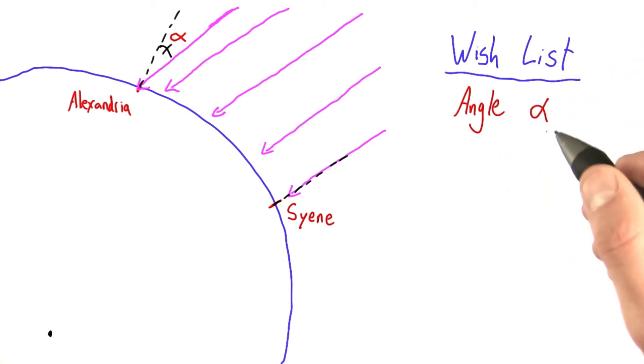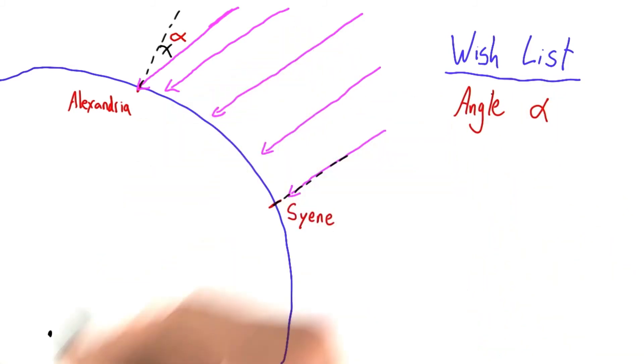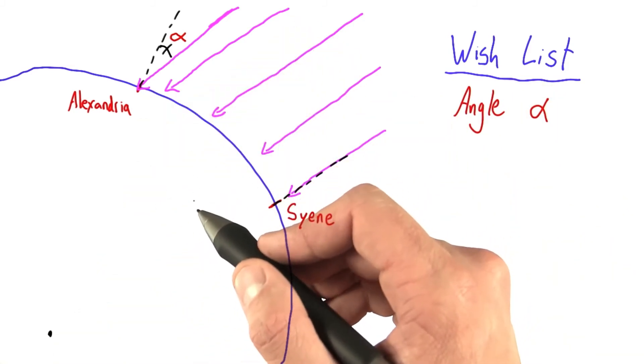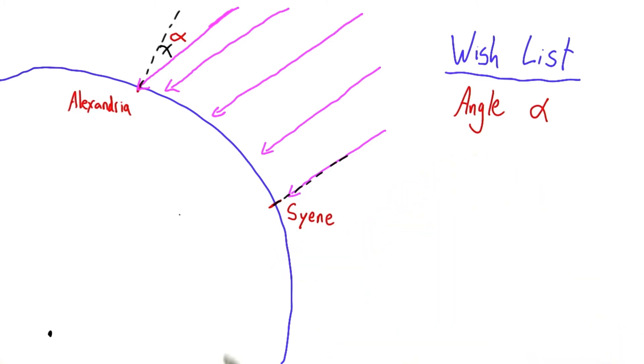Now what are we going to do with this angle alpha? Let's not even worry about how to calculate it yet. What are we going to do with it? Well, whenever I get stuck on a geometry problem, I start drawing lines, and they usually help me.